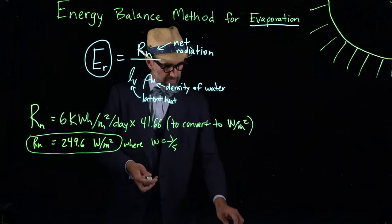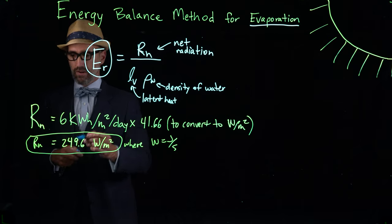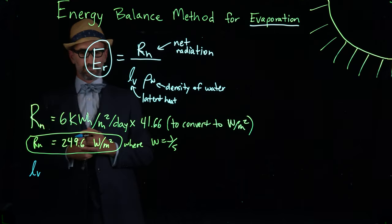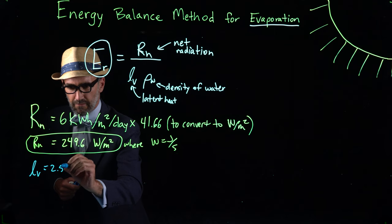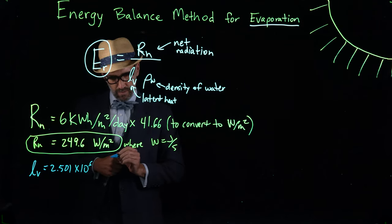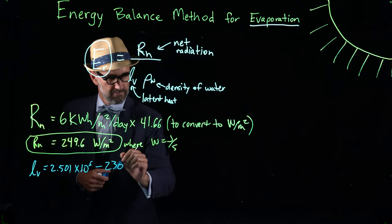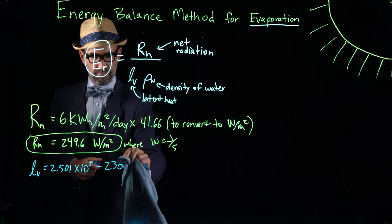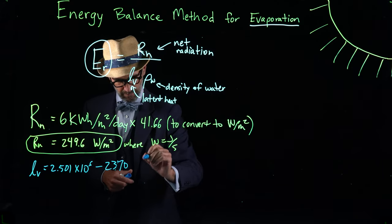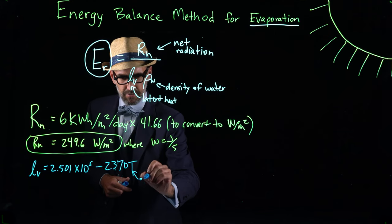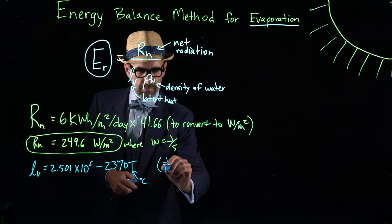The second variable, and this is an equation that was in your notes, is for the latent heat. The latent heat of water is dependent on the temperature of water. And so we have L of V is equal to 2.501 times 10 to the 6 minus 2,370 T, where T is in degrees C, and the units for this equation are in joules per kg.